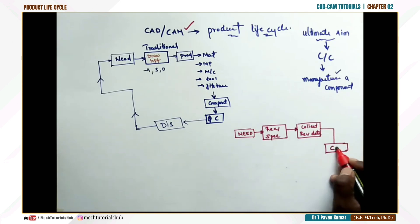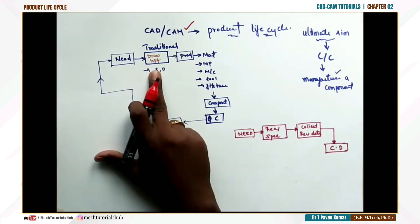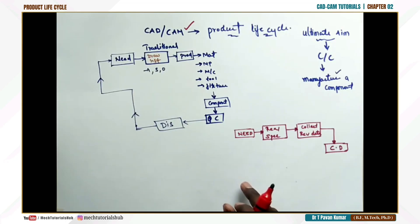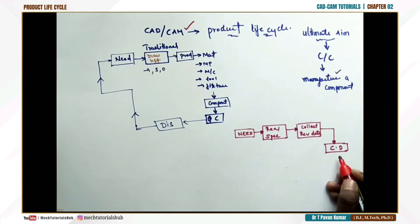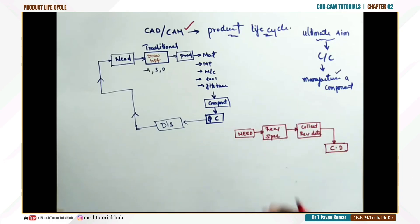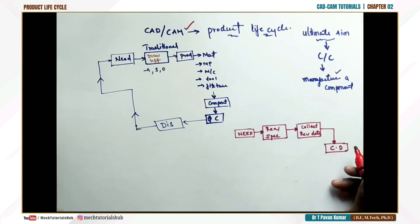Once data is collected, we go to the conceptual design or drawing. In the traditional way, this was done with a drawing sheet and drafter. Now, conceptual drawing can be performed using a simple software like AutoCAD or any other 3D modeling software. As we are discussing AutoCAD here, conceptual drawings are prepared using that software, with all specifications set for each part of the assembly.